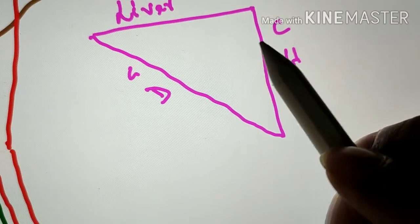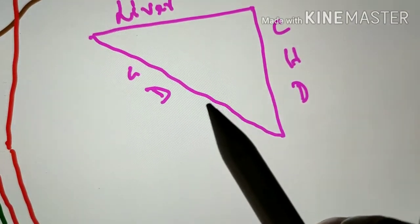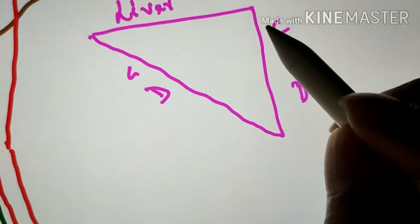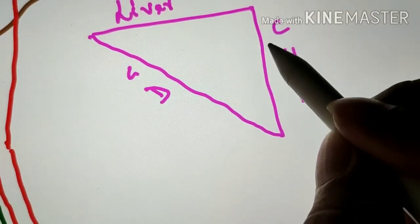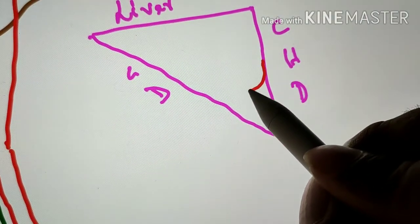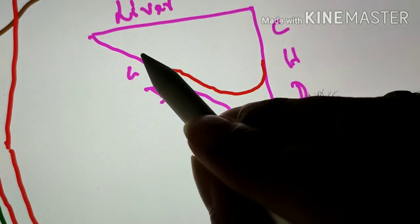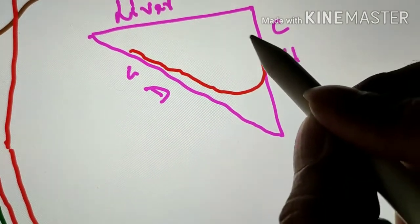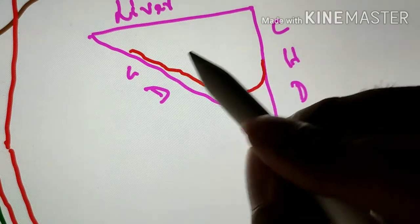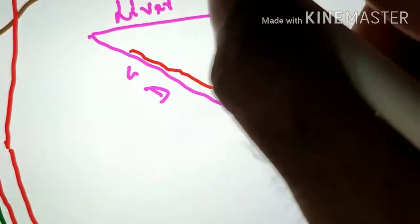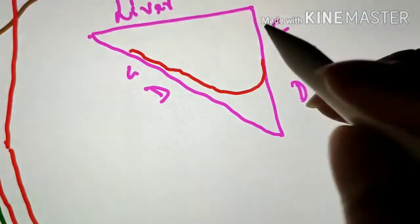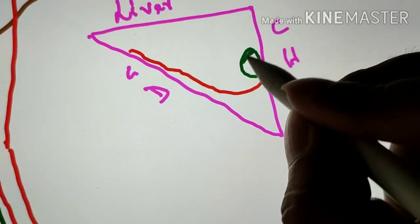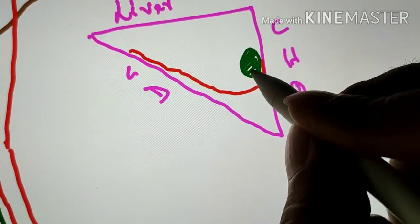Between the two layers of peritoneum there is a variable amount of fatty connective tissue. The important contents include the cystic artery, which runs through this area. There are also many lymphatics present, along with a lymph node called the cystic lymph node, located roughly in this area.